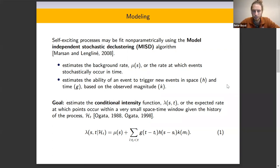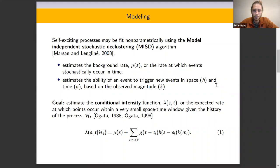The goal is to estimate the conditional intensity function, denoted lambda, which is the expected rate at which points occur within a very small space-time window given the history of the process H. We can define this conditional intensity as a function of space and time conditioned on history, which equals however many background rates we expect to see, plus however many triggered events we expect to see.